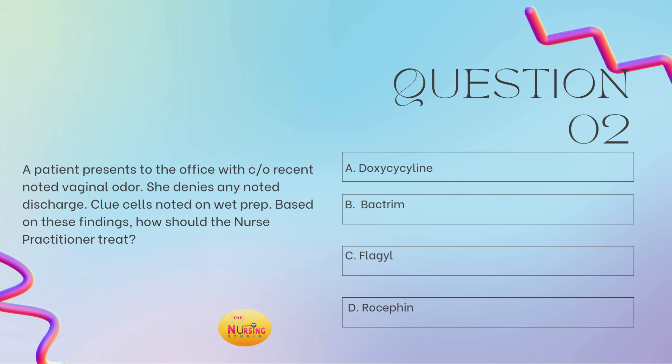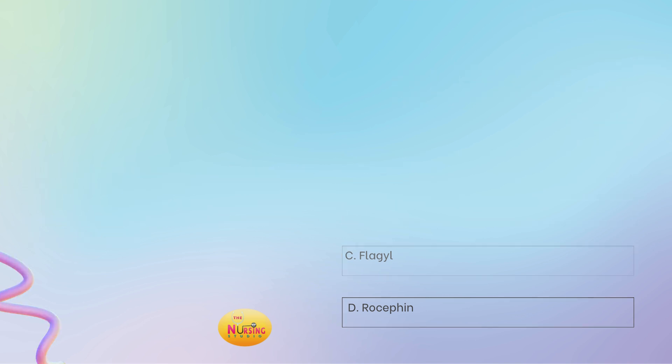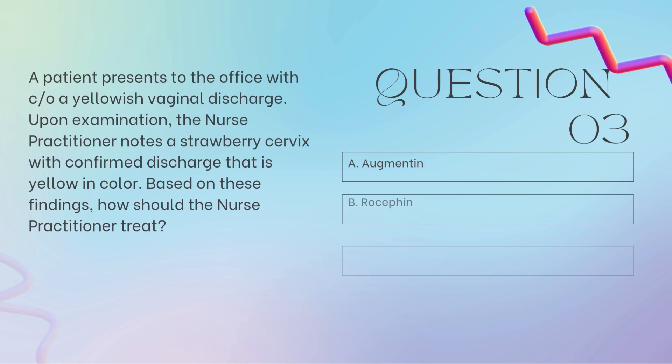That's your confirmation of bacterial vaginosis. So then you need to think about how do we treat bacterial vaginosis. First-line therapy is Flagyl, so C is your best answer.